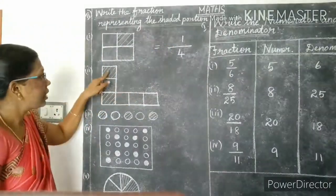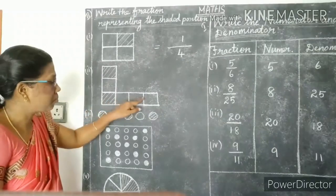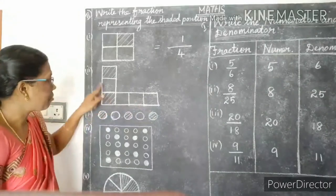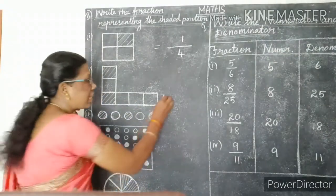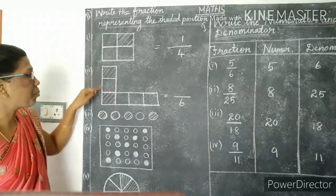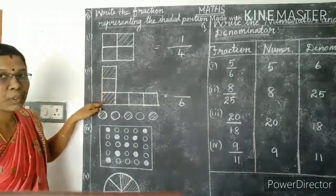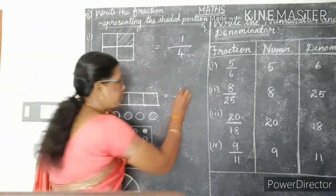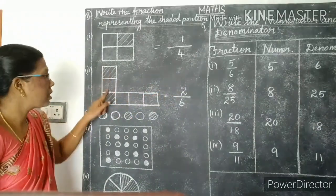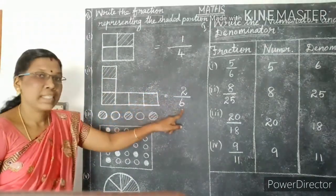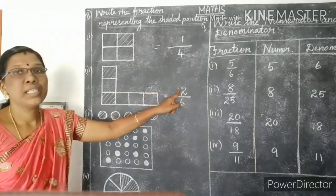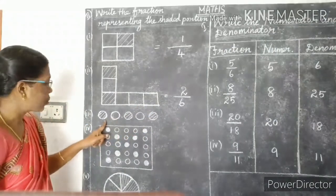See the next one. Total number of portions are six — so write six as denominator. Count the number of shaded portions: one, two. Write two as numerator. Shaded portion is numerator, total number of portions is denominator. So the fraction of this shaded portion is two by six.